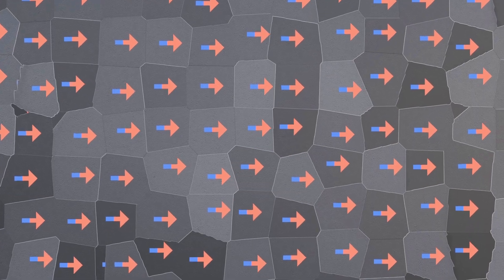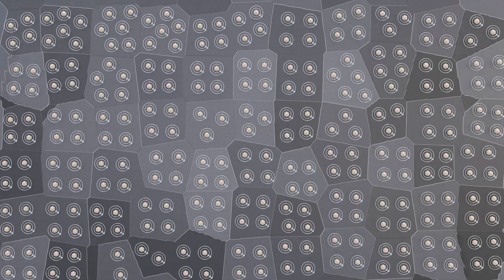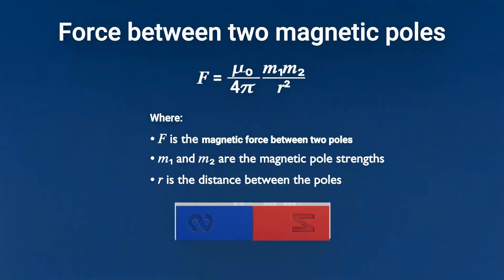Magnetic domains. Tiny regions within a material where the magnetic moments of atoms align in the same direction. The force between two magnetic poles can be calculated using the following equation.